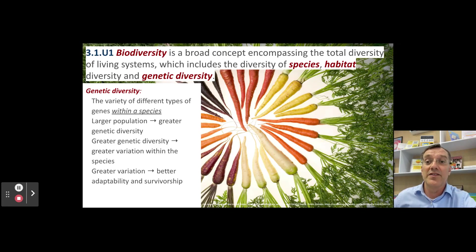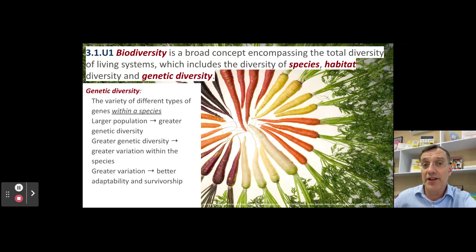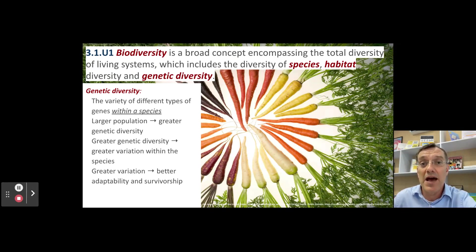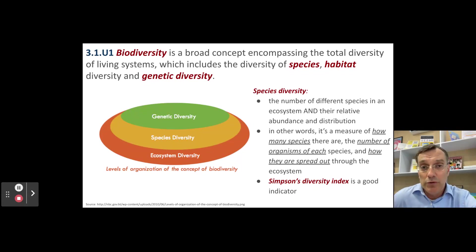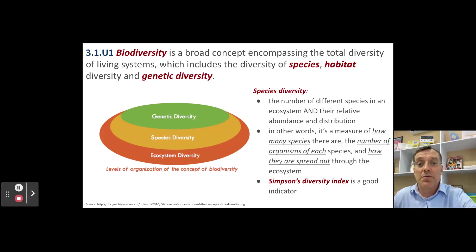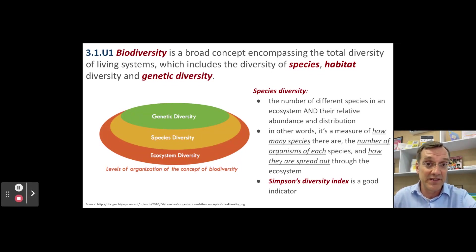This image exemplifies the concept of genetic diversity. All of these carrots are the same species, but because they have different combinations of alleles in their genomes, they have different phenotypes or physical appearances. That means some of these carrots may be better suited for certain climatic or soil conditions. Species diversity is both the number of different species — species richness — and their relative abundance or distribution across the ecosystem, which is species evenness.